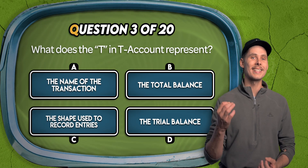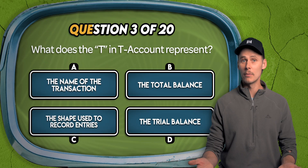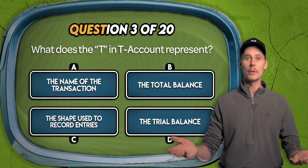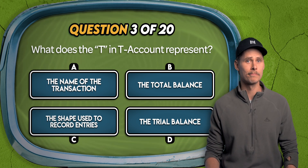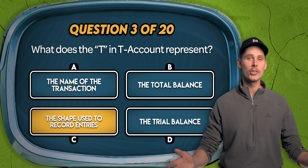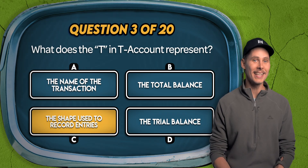Question 3. What does the T in T-account represent? The name of the transaction, the total balance, the shape used to record entries, or the trial balance? The answer is C. It's called a T-account because it's shaped like the letter T.